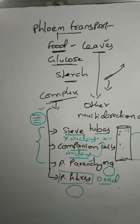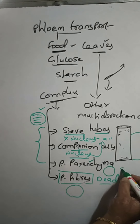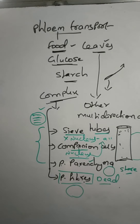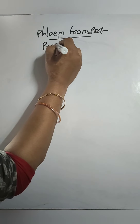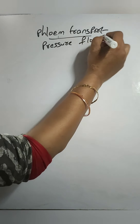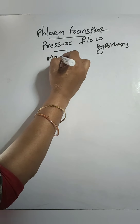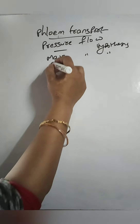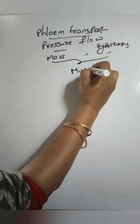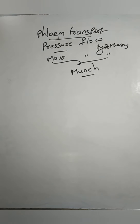Coming to phloem parenchyma — we know that parenchyma are living cells with a thin cell membrane. Their main function is storage, and here phloem parenchyma stores food materials. These are the different types of phloem cells. Phloem transport is explained by a mechanism hypothesis called the pressure flow hypothesis, or mass flow hypothesis, proposed by Munch to explain phloem transportation, that is food transportation.